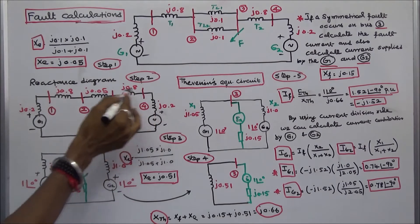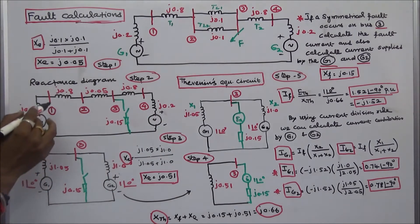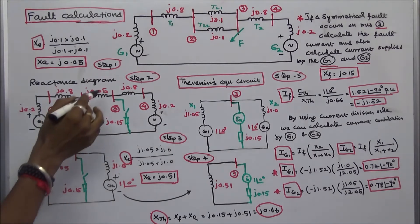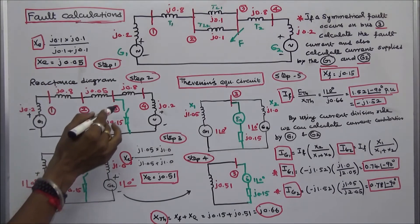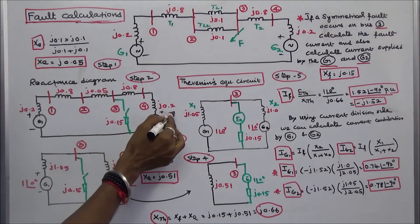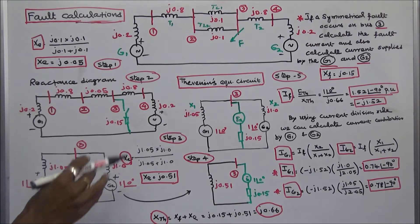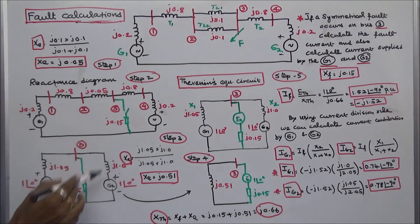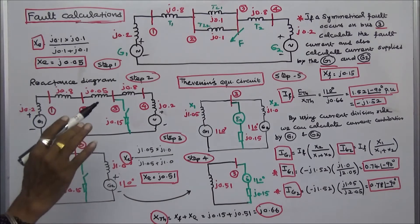Step 2: we have to draw the reactance diagram. The generator reactance is J0.2 per unit, transformer reactance is J0.8 per unit, transmission line effective reactance is J0.05 per unit, the second transformer reactance is J0.8 per unit, and the second generator reactance is J0.2 per unit. Our aim is to calculate the fault reactance between the fault point and the neutral point, which is given as J0.15.